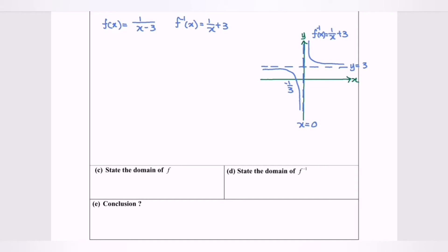In this video I'm going to discuss the relationship between f and f inverse. Given f(x) equals 1 over x minus 3, the f inverse equals 1 over x plus 3, and we have the diagram on the right hand side.